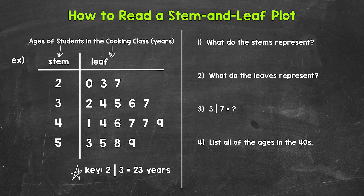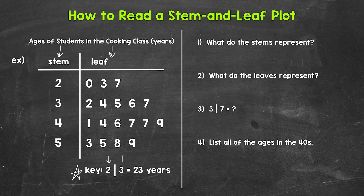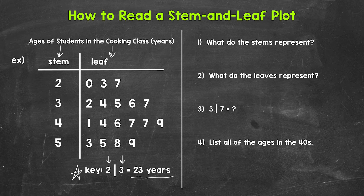Stem and leaf plots can include two-digit numbers, three-digit numbers, decimals — whatever the case may be. So the key will tell us what we're looking at. This key says that a stem of two on the left and a leaf of three on the right equals 23. We have a label of years here since we are working with ages. So that tells us that these stems represent the tens place, the tens digit, and the leaves represent the ones place, the ones digit.